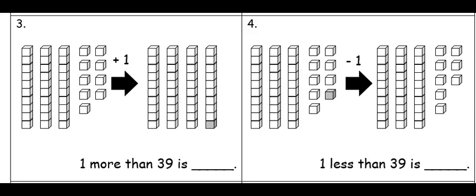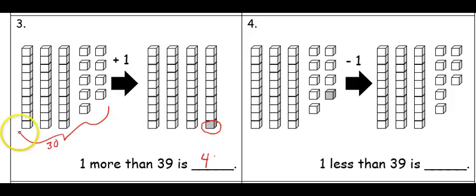The next question is asking what is one more than thirty-nine. In my first picture, I have thirty-nine cubes. I have the thirty, shown by the three sticks, and then nine more cubes. In my second picture, I've added one more cube onto nine cubes. That allowed me to make another group of ten, or forty.